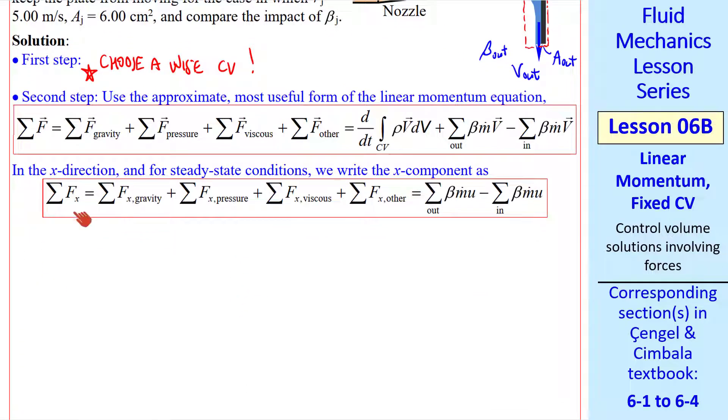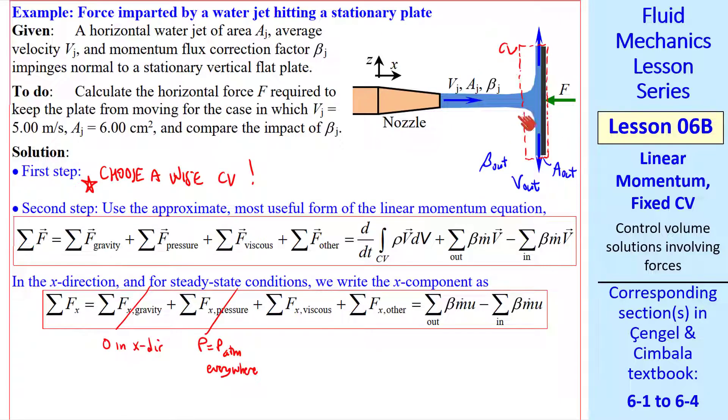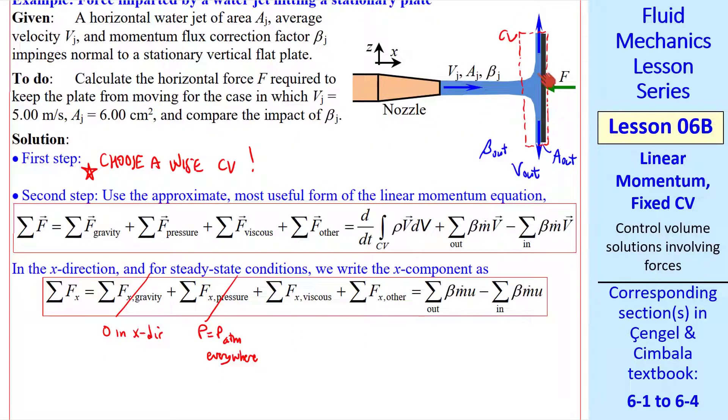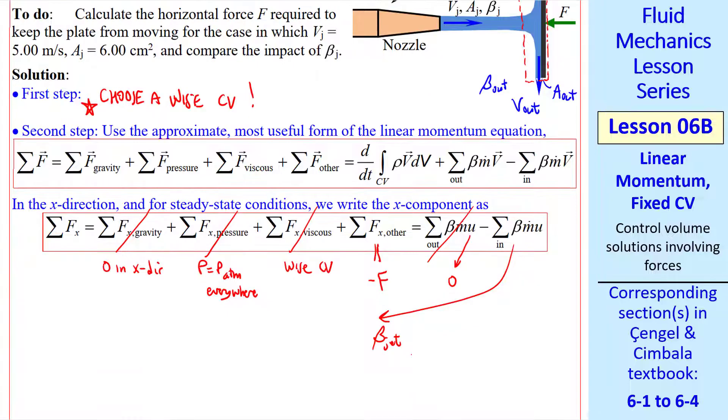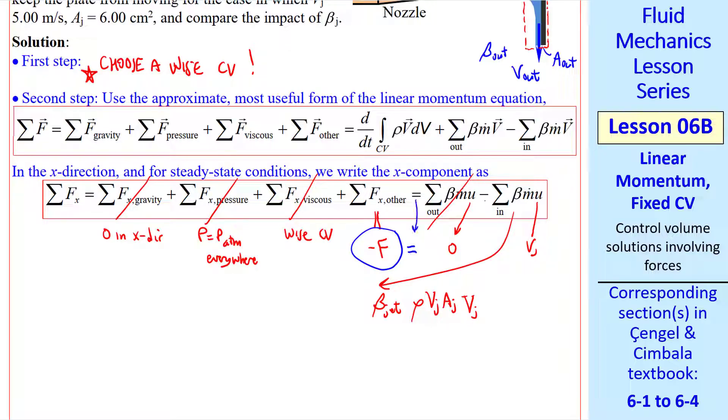Now let's use our workhorse equation again. We're talking again about just the x component. It's steady state so we don't have the unsteady term. And I like to first cross off the terms that are zero, and then deal with the rest. There's no gravity in the x direction, p equal p atmosphere everywhere. By wise choice of control volume, the pressure acting on the left is the same as the pressure acting on the right. So the pressure forces cancel everywhere. Similar to the previous problem, there are viscous forces along the plate, but they're inside our control volume, so this term goes away by wise choice of control volume. The only other force is f and it's in the negative direction, acting on our control volume. The x component of the velocity at the outlet is zero everywhere, so this term goes away. We have only one inlet, our beta is beta jet, our mass flow rate is rho vj aj, and then u is vj. So the only two remaining terms are this term, negative f, equal, and there's a negative sign here. So my final result for f is beta j rho vj squared aj, which is our answer in variables.